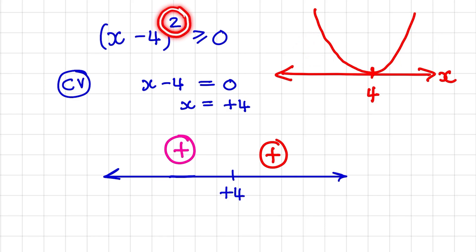when we have squared, it means that that critical value is repeated. And when it is repeated, the sign undergoes a double change. So it won't go from positive to negative, but it would rather go positive and then positive again.